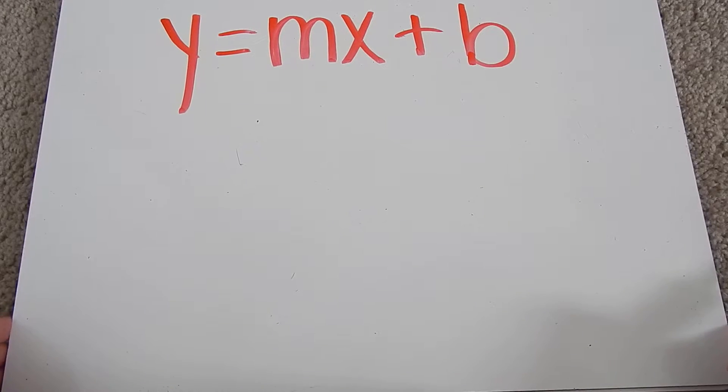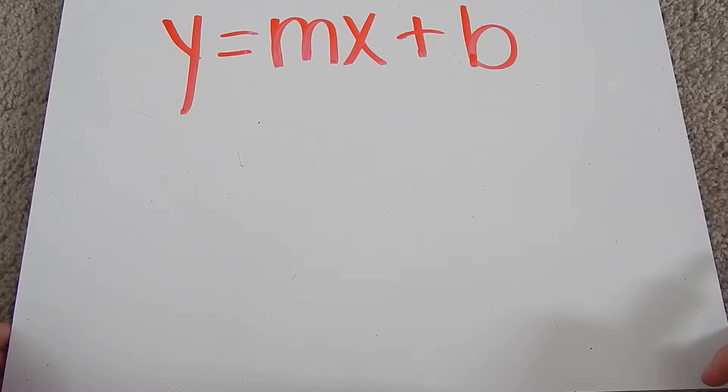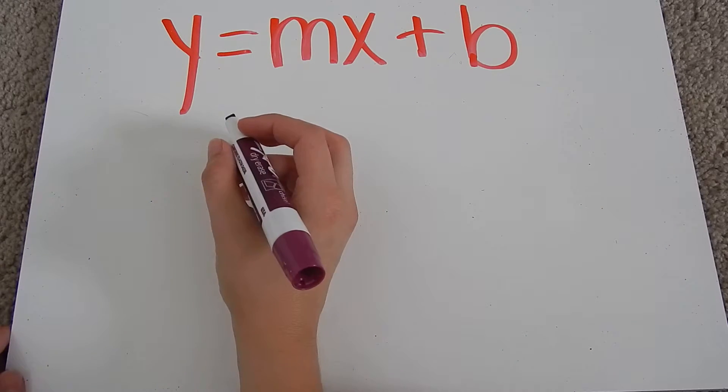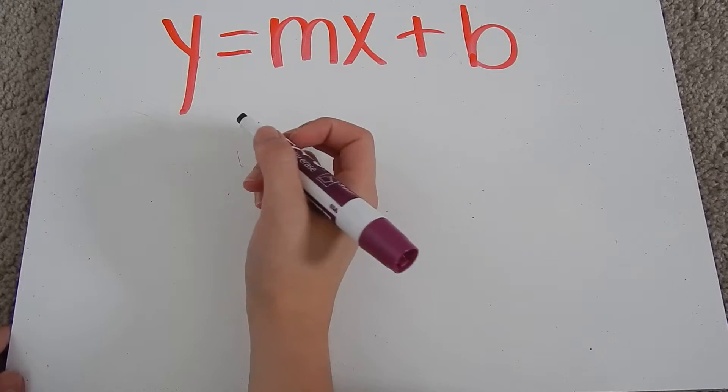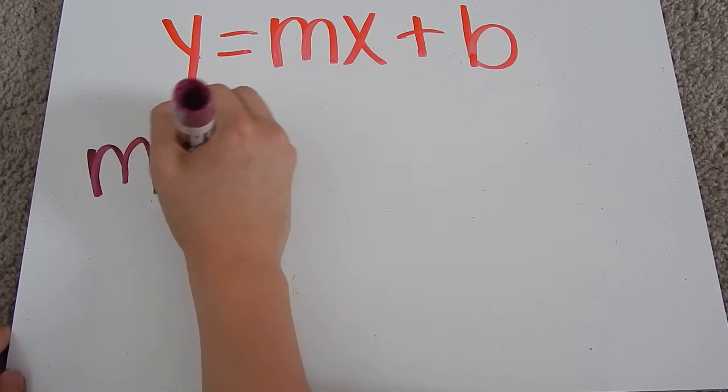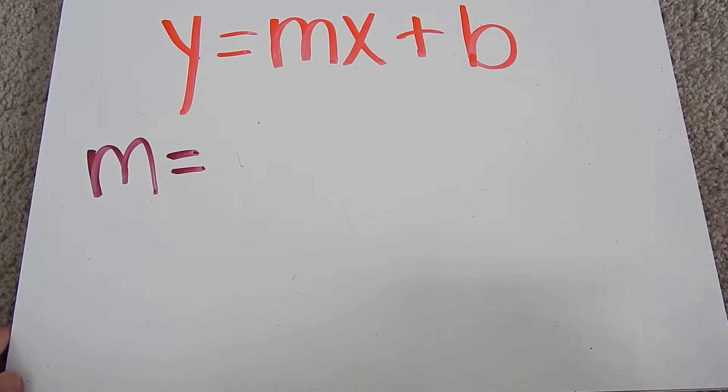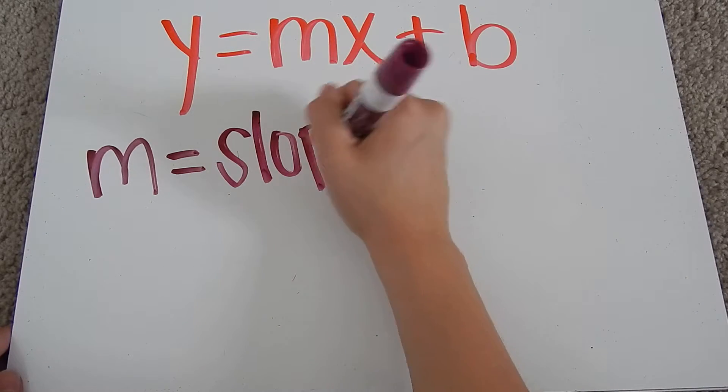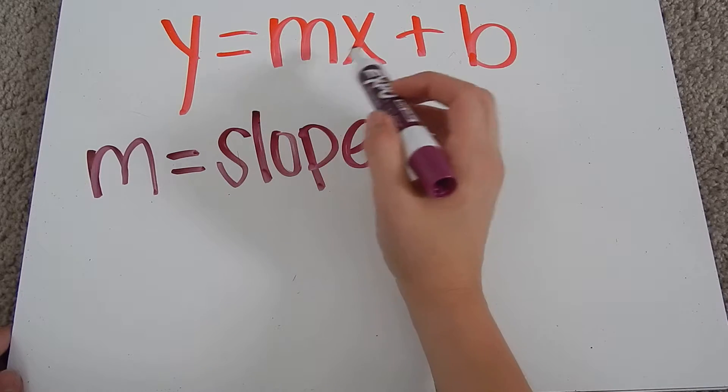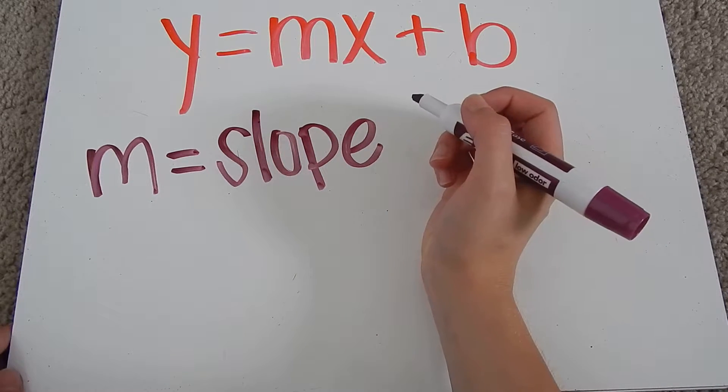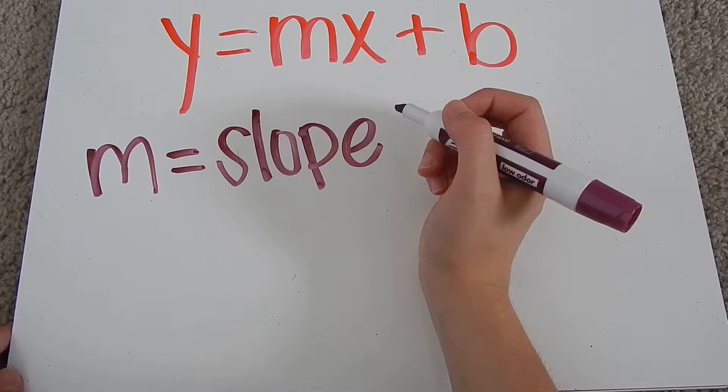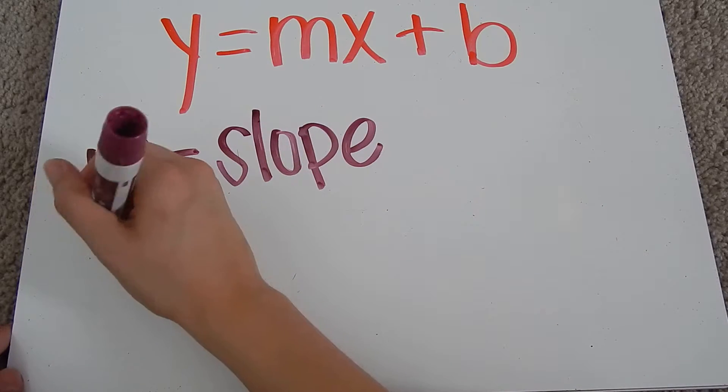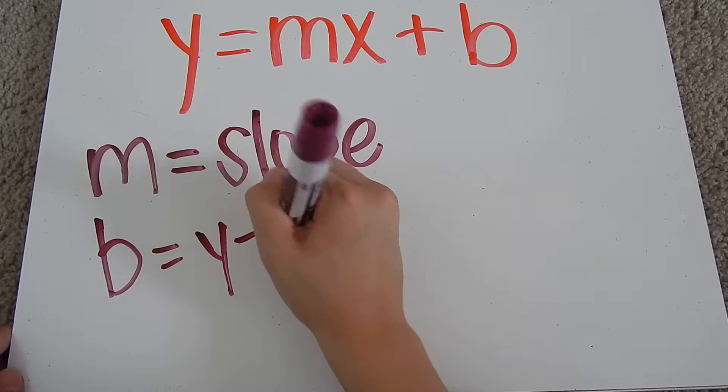Slope-intercept form gives us the slope and the intercept in the formula, so we need to define what these variables are. The y and x are obviously y and x. m is a special variable and always means slope, so the m or whatever is attached to the x will always be the slope in the equation. The b is the y-intercept.